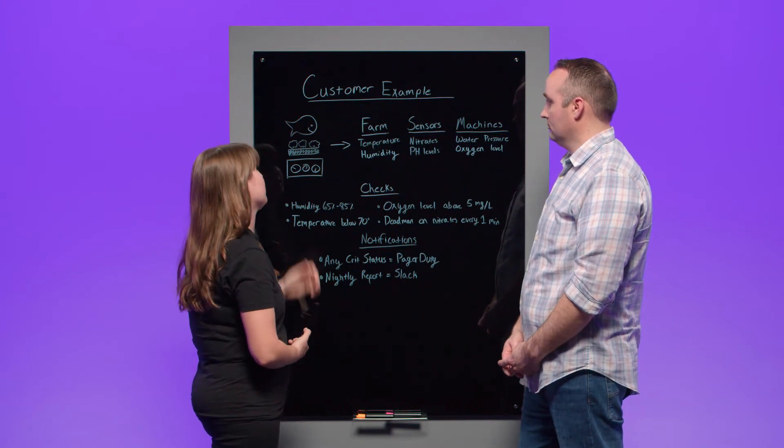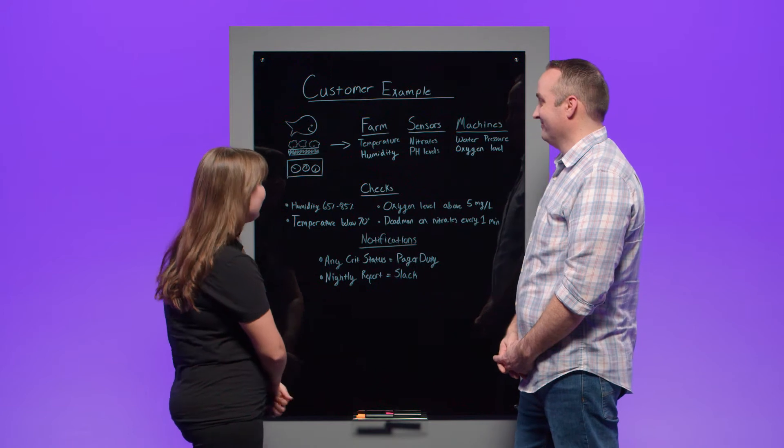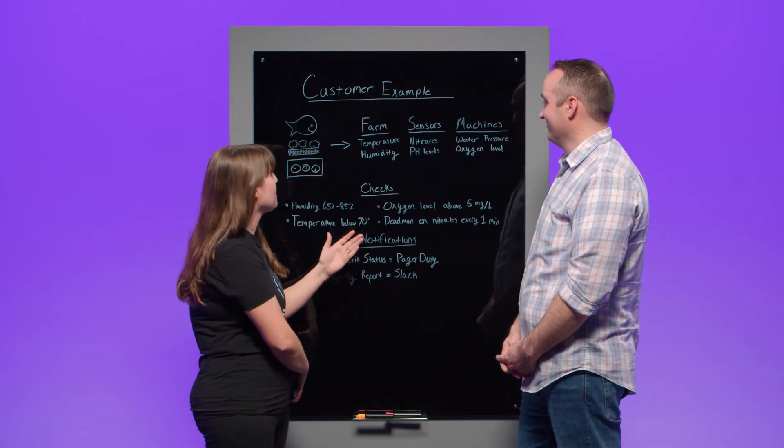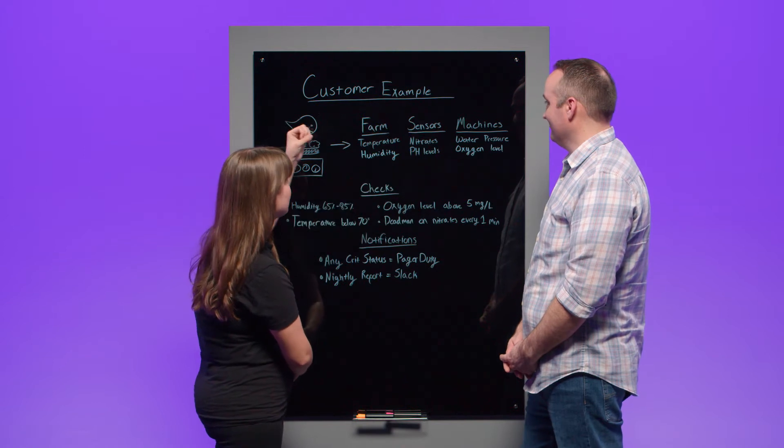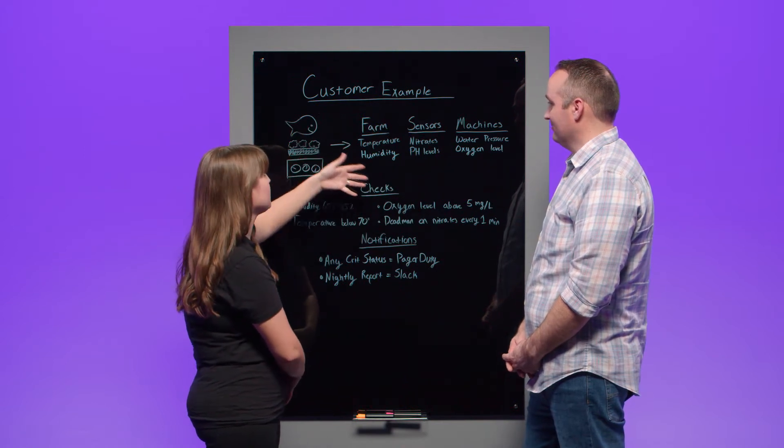Specifically, they are growing both tilapia and lettuce together. Interesting. I like both of those. Exactly. Don't we all? So in this system, they have many different types of IoT sensors, machines,